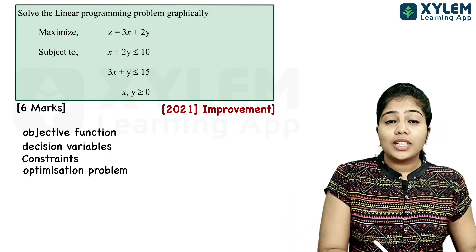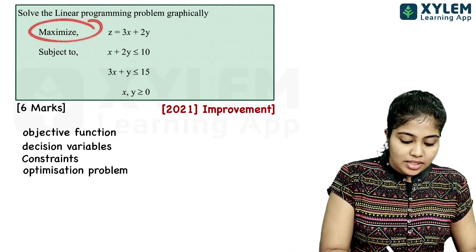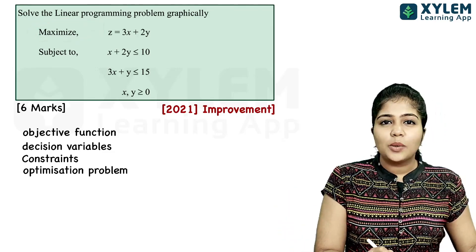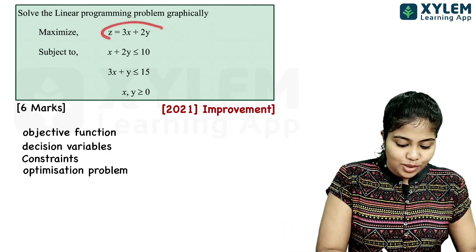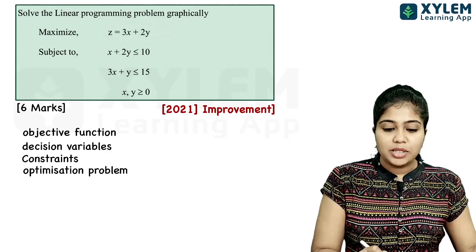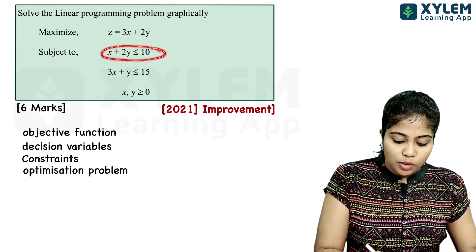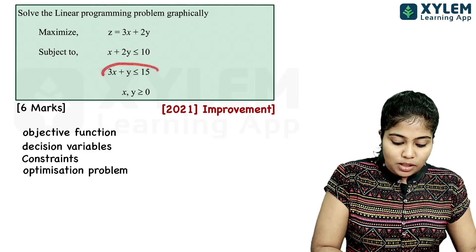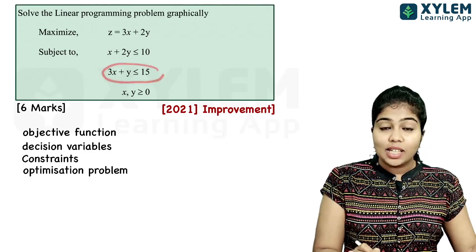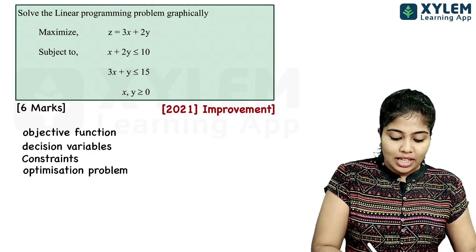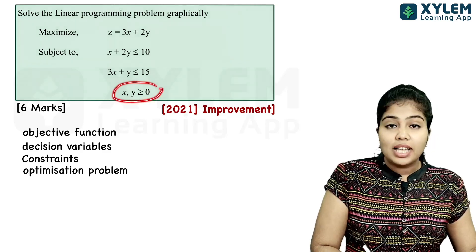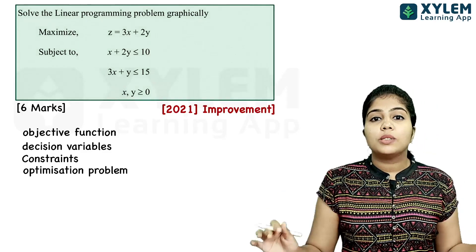We call it: maximize z is equal to 3x plus 2y, subject to x plus 2y less than or equal to 10, 3x plus y less than or equal to 15, x, y greater than or equal to 0.